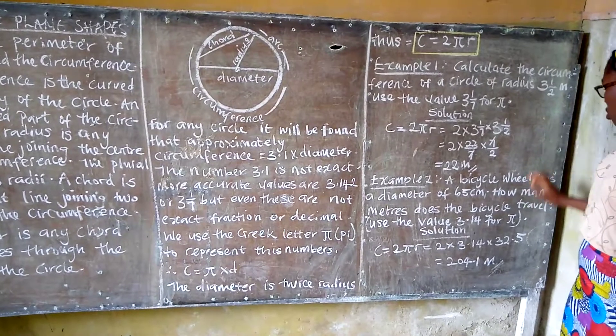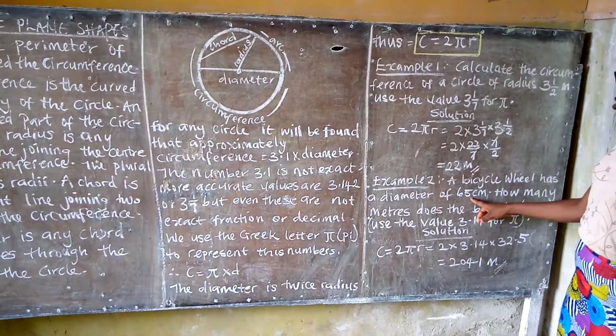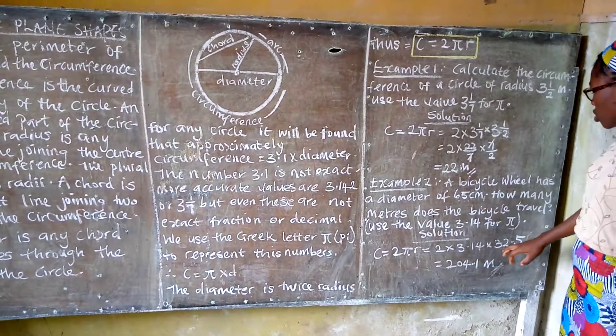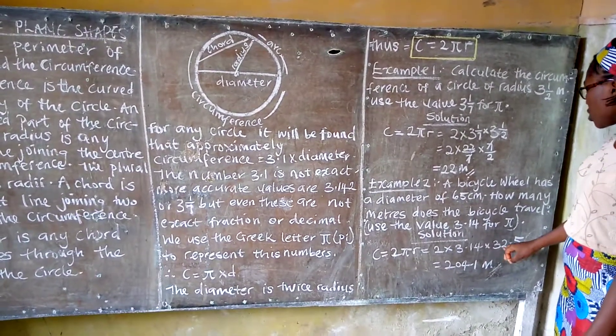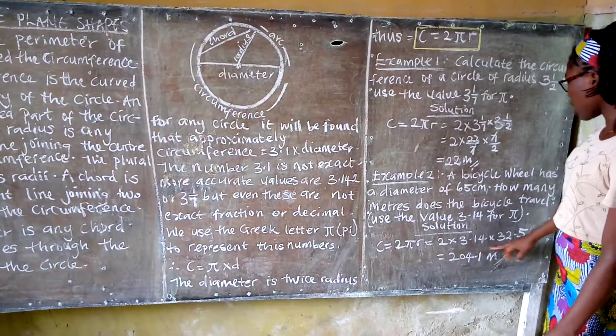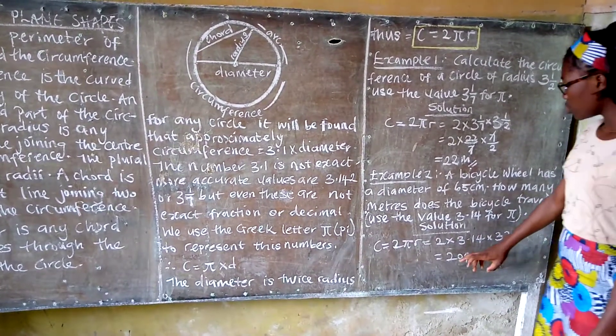If the diameter is 65 centimeters, we divide 65 by 2 to get the radius. So the radius is 32.5. When you multiply everything together, you get 204.1 centimeters.